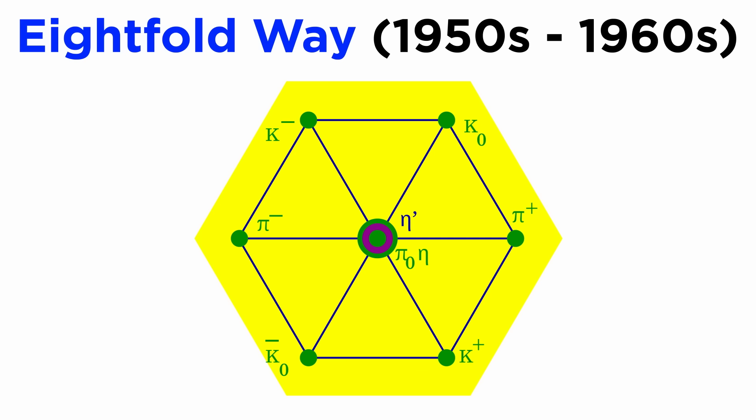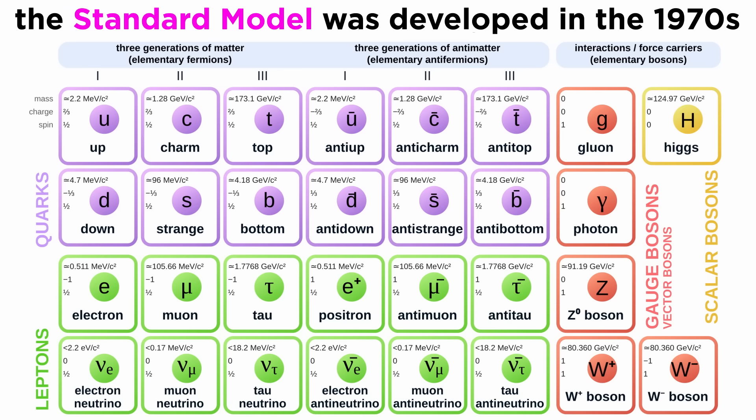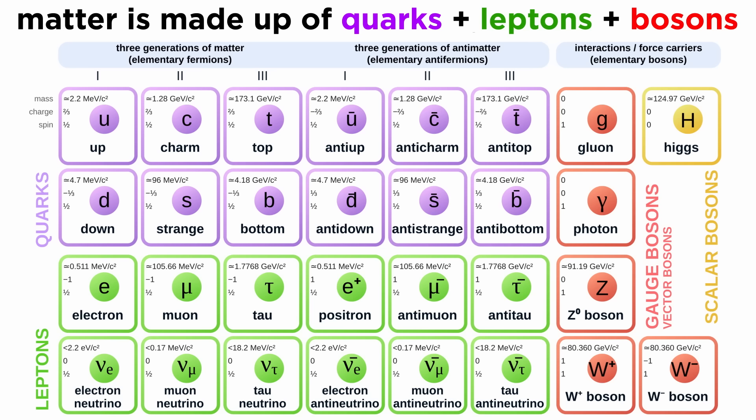Originally, an arrangement called the Eightfold Way was proposed. This took various particles, largely baryonic, meaning made of quarks, and placed them into geometrical patterns. It provided the first structure for particle physicists to follow and guided the field through the early 1960s. From the success of the Eightfold Way, it was eventually discovered that matter was made up of three types of basic building blocks, and with that the standard model was born.